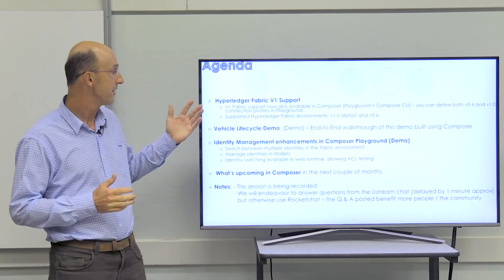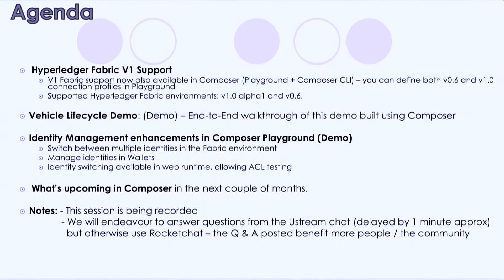We're going to introduce some of the things that have recently been updated in Hyperledger Composer. One of the main things has been Hyperledger Fabric V1 support. We've added V1 support in Composer, so in both Playground and the Composer CLI you can now define connection profiles for both version 0.6 and V1.0. The supported Hyperledger Fabric environments are now V1.0 alpha 1 and V0.6, and we're working on support for the recently available V1.0 alpha 2.